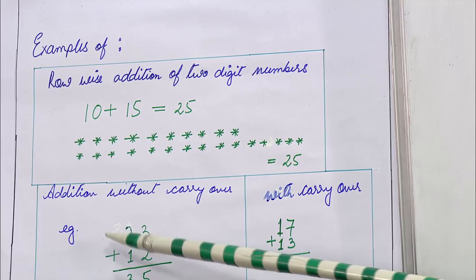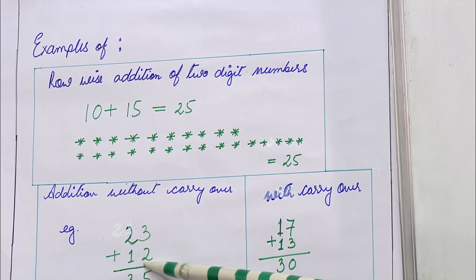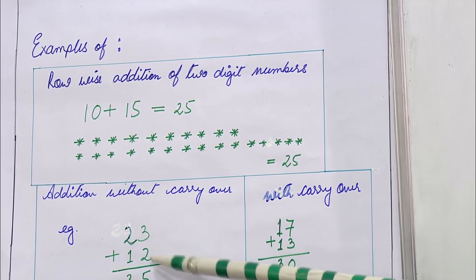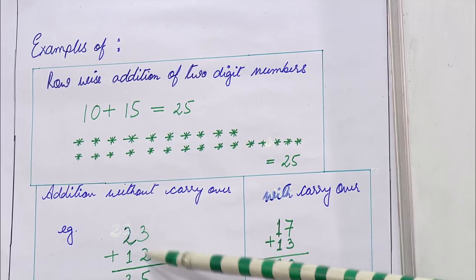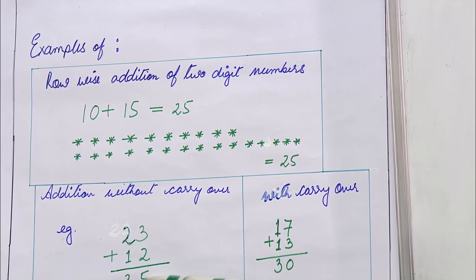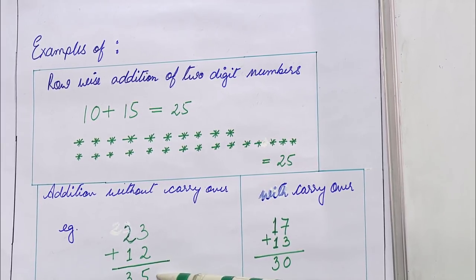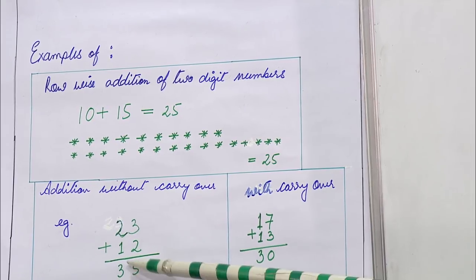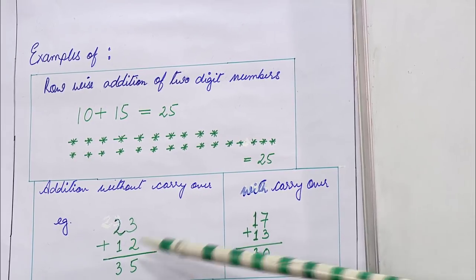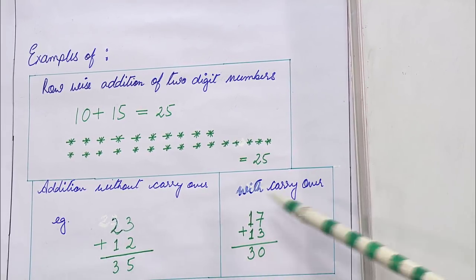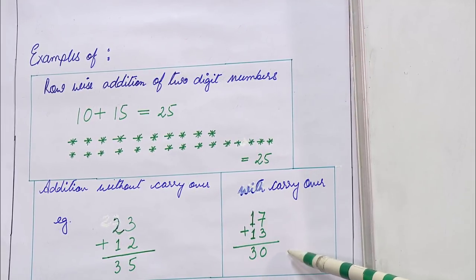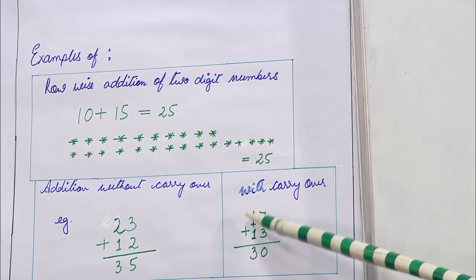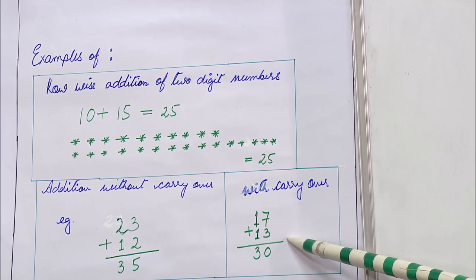For addition without carryover, suppose 23 plus 12: 3 plus 2 is 5 with no carryover, and 2 plus 1 is 3, giving 35. For addition with carryover, consider the example 17 plus 13.